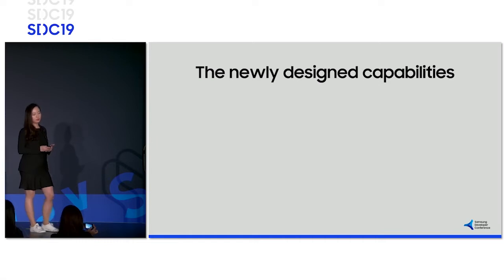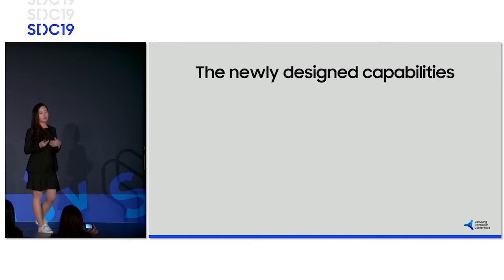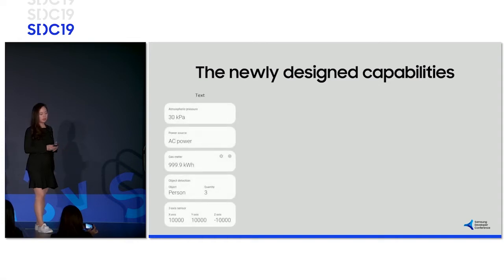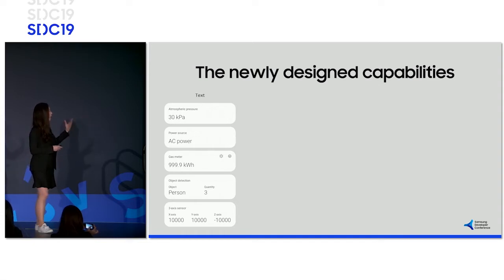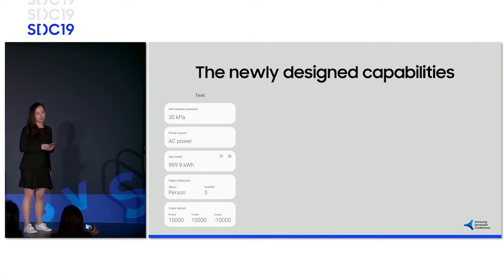Next spring, we'll be introducing a new look for the individual capabilities. We've looked at each and every one of the capabilities and grouped them depending on their characteristics. First, we have types that display simple text. Some capabilities may show different values — for the three-axis sensor, we have the X, Y, Z value — but they're all put together in one capability card.